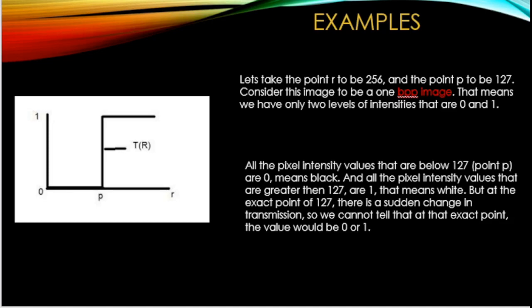Now let's discuss some basic and important information about transformation functions. Consider a graph with two points p and r and two intensity values 0 and 1, with transformation function d. If r is at 256 and p is at 127, for a binary image, pixel intensity values below 127 are 0 (black) and values greater than 127 are 1 (white). At the exact point 127, there is a sudden change and we cannot determine if the value would be 0 or 1.